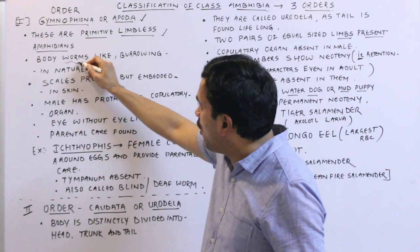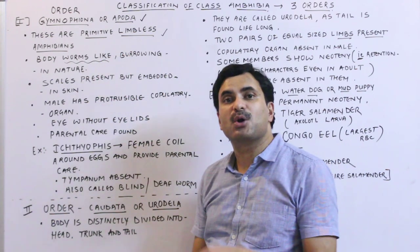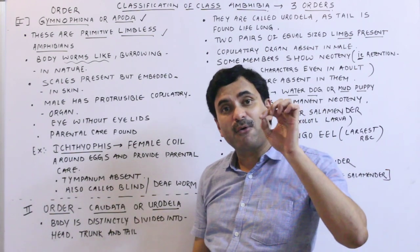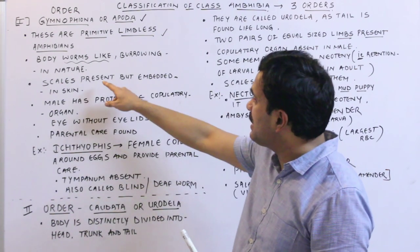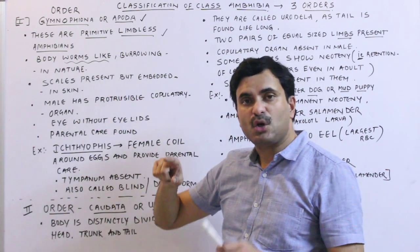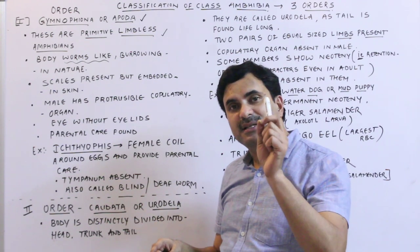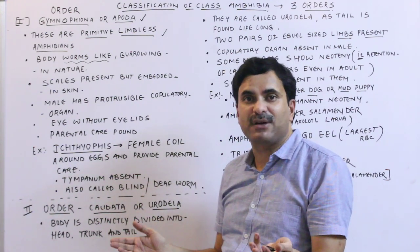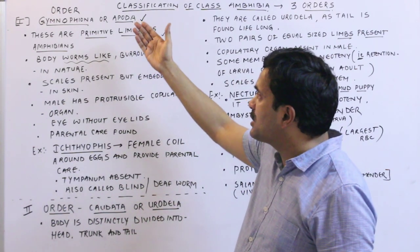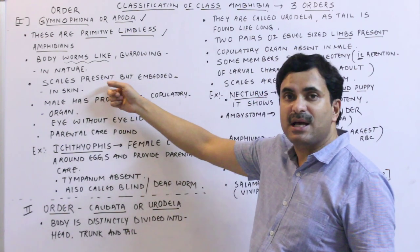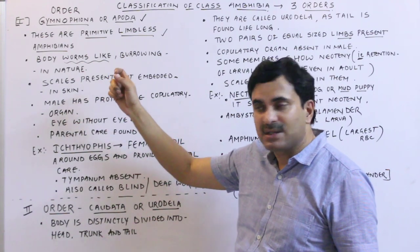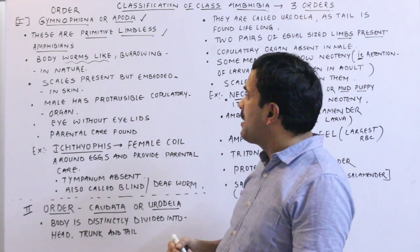Their body is long and worm-like, and they are burrowing in nature — meaning they form burrows. Scales are present in them but they are embedded in the skin. Normally in the general characters of amphibians, scales are absent and the frog's skin is smooth, but here in Order Gymnophiona, scales are present though embedded in the skin.